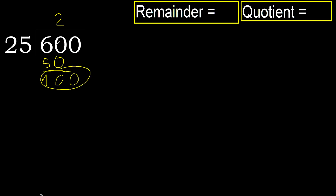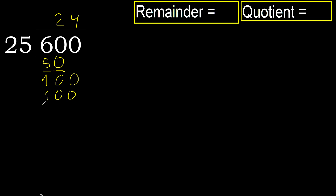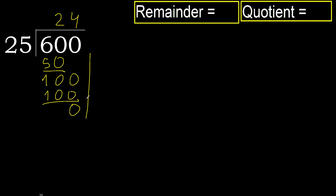100. 25 multiplied by 5 is greater. Multiply by 4: 100 is not greater. Subtract: 100 minus 100 equals 0. Next.